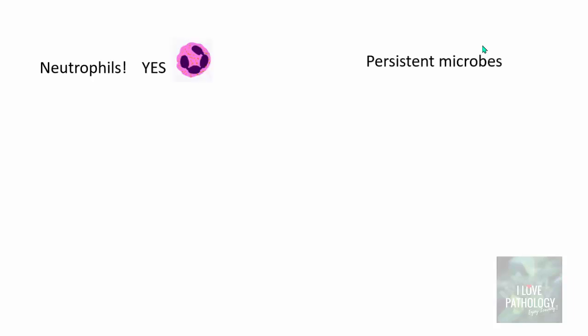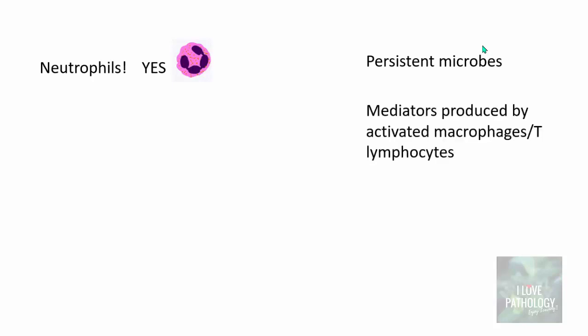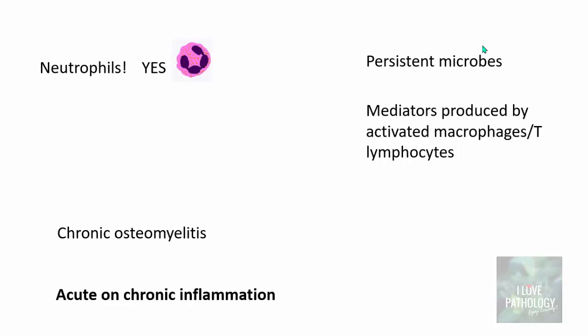Lastly, neutrophils are not just found in acute inflammation alone — they are also found in chronic inflammation, because whenever there is persistence of microbes that cannot be eradicated, neutrophils remain active. Neutrophils are also produced by mediators from activated macrophages and T lymphocytes. For example, in chronic osteomyelitis, though it is a chronic entity, you find lots of neutrophils or collections of neutrophils in the form of pus. The term 'acute on chronic inflammation' is also used when you find acute inflammation superimposed on a pre-existing chronic inflammation.